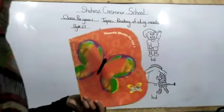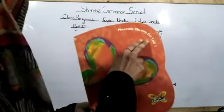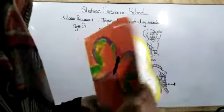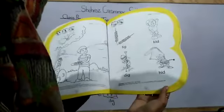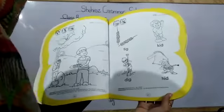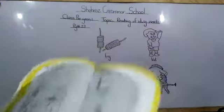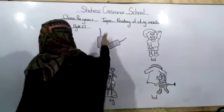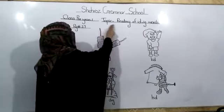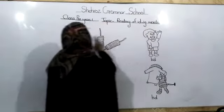Assalamualaikum dear students. It's your Phonemic Crimes Prayer 1, page number 27, reading of idik words. Today we will do reading of idik words. Topic: reading of idik words.